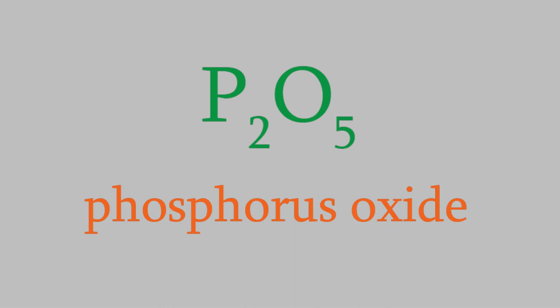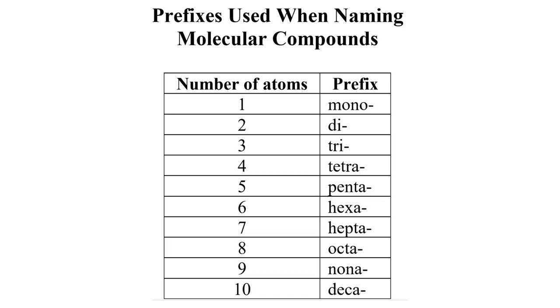To write the name of the compound, we write the name of the first element, followed by the name of the second element, with the end of the second word replaced by the suffix -ide. For this compound, that gives us phosphorus oxide. So far, that's just like the way we named ionic compounds, but this time we need to add a prefix to each word so that we know how many of each element are present.